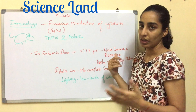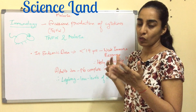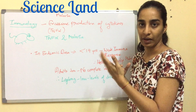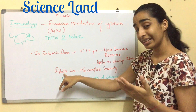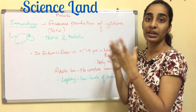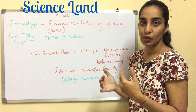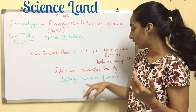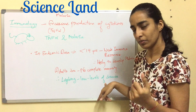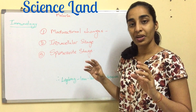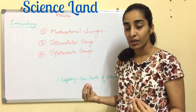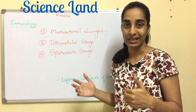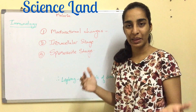In endemic areas, children under 14 years of age have very weak immune responses, making them more likely to develop the disease. Adults also do not have complete immunity, so there are always low levels of Plasmodium in their bodies.